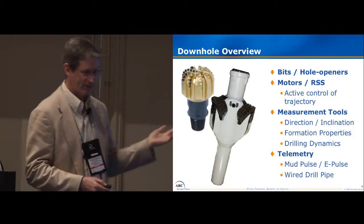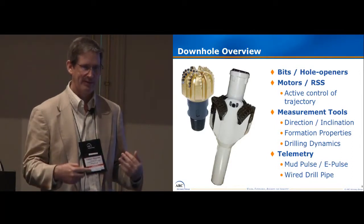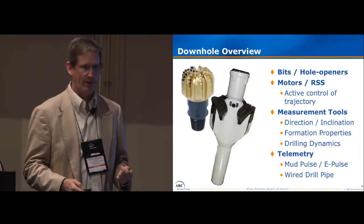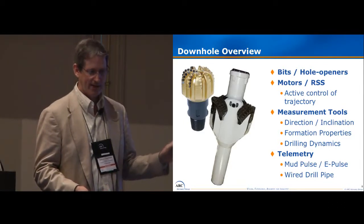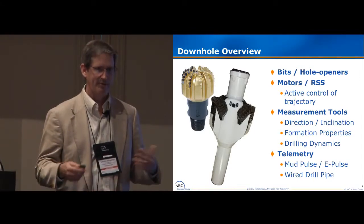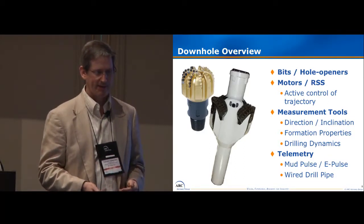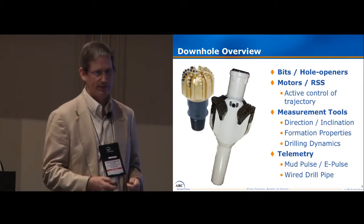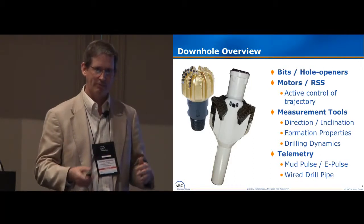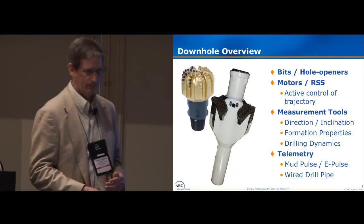Downhole is a completely different world. There's a lot of dumb iron — bits and hole openers — and then you move up into things doing actuation, like motors and rotary steerables with active control. There are measurement tools taking direction and inclination, trying to get formation properties using gamma ray, and sensing drilling dynamics like vibration and weight transmitted down hole. Telemetry transmits all of this back up via mud pulse or e-pulse. The newest addition to drilling is wired drill pipe, which offers the capability of going from 12 bits per second up to megabits per second.